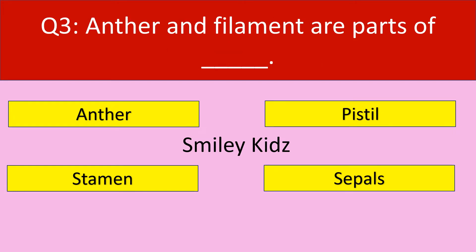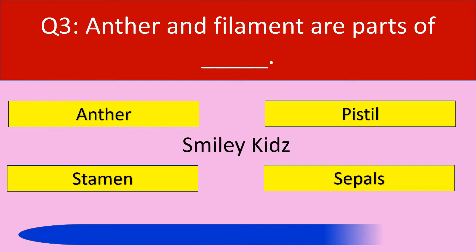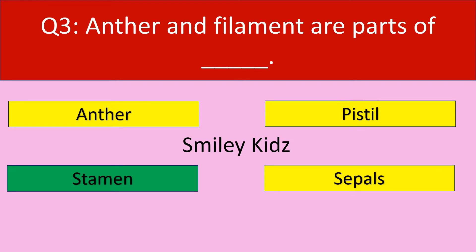Question number 3. Anther and filament are parts of. Options are: anther, pistil, stamen, sepals. Your time starts now. Your time is up. The correct answer is stamen. Anther and filament are parts of stamen.